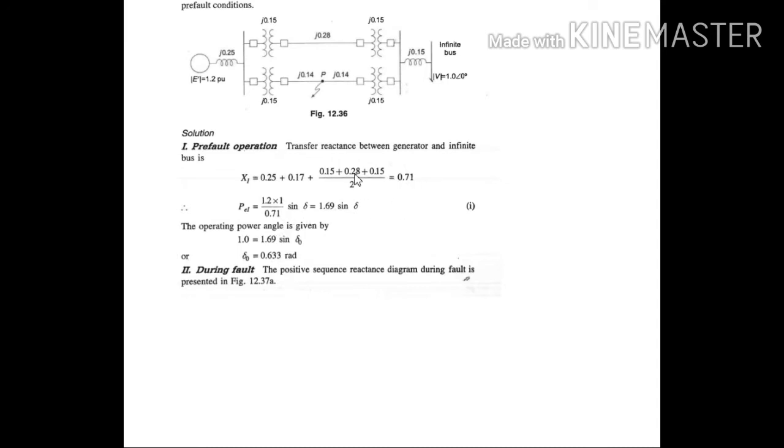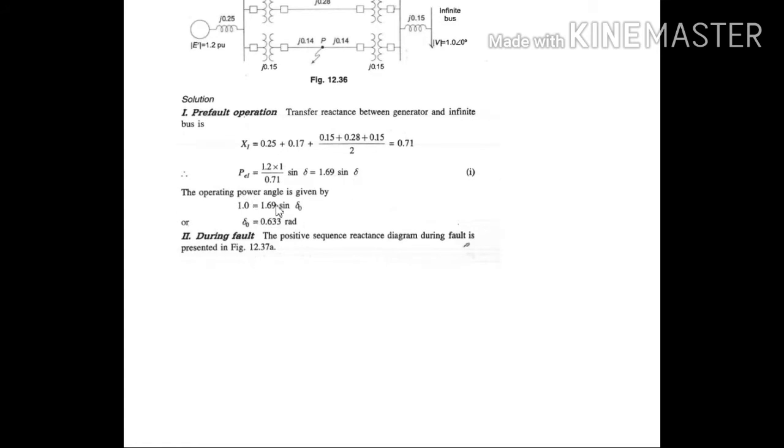Then substituting all the values in the expression PE equals EV by X sine delta. The value is 1.69 sine delta. The operating power angle is given as 1 equals 1.69 sine delta 0. This expression is PM initial loading. PM0 equals PE0 equals PE1 or Pmax1 sine delta 0. From this we obtain delta 0 as 0.633 radian.